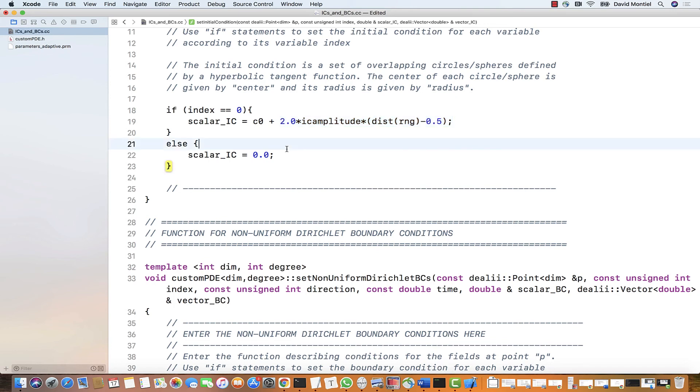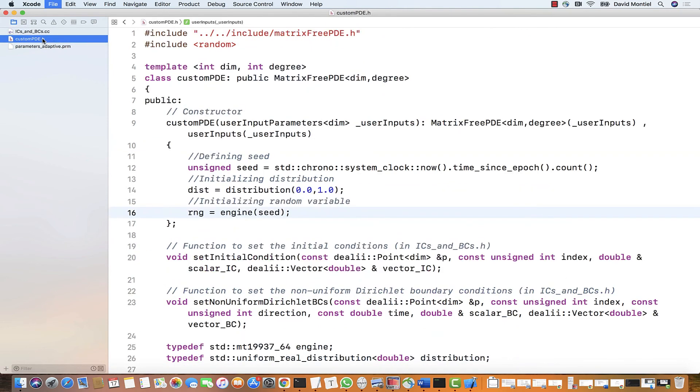And for the other variable, which is mu, which has the index one, we don't need to do anything. Okay, that is all we need to change. Let's save, compile and run. I'm going to skip this step because we've shown this before.